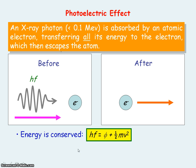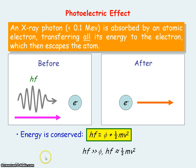Energy is conserved in this process, where hf is the photon energy of the X-ray, phi represents the energy needed to remove an electron from an atom, and the remaining energy appears as the kinetic energy of the emitted electron. The photon energy is actually much, much greater than the energy needed to remove the electron from the atom, and so most of the photon energy appears as the kinetic energy of the electron.